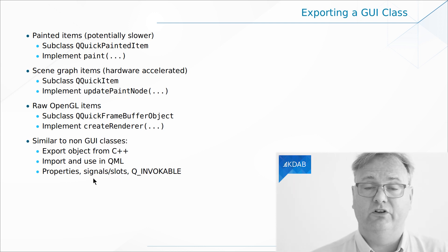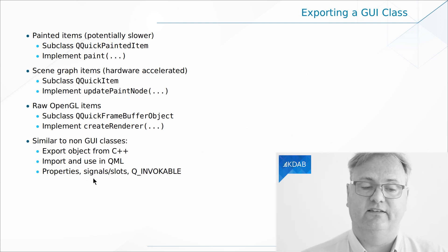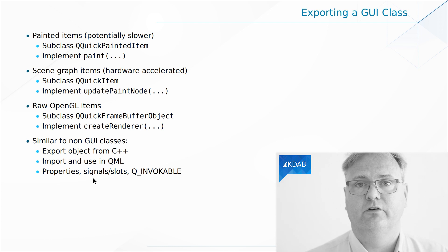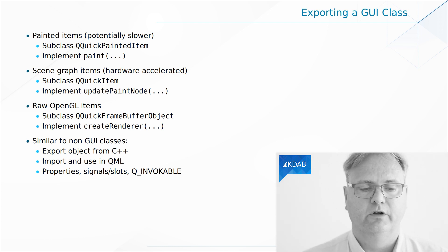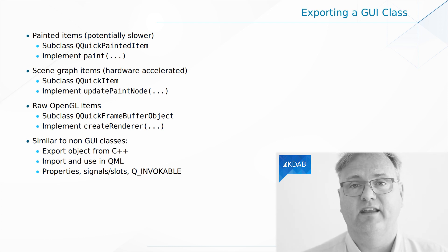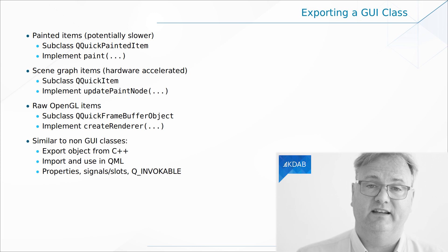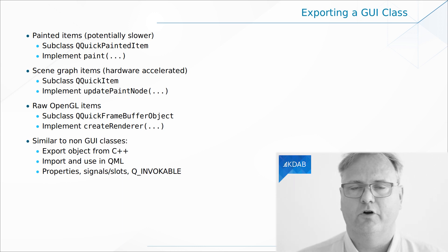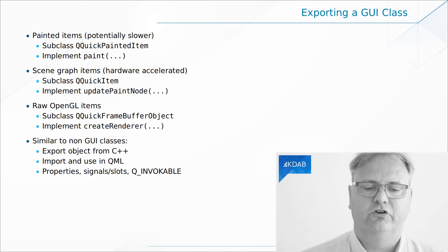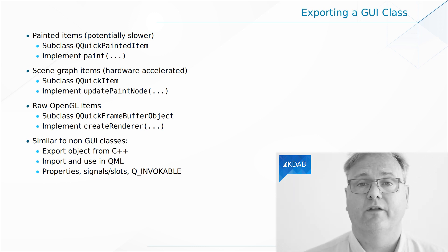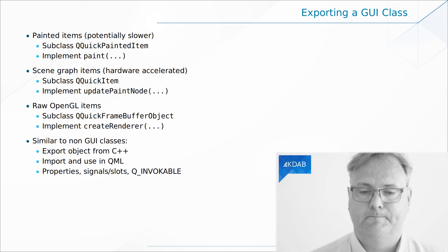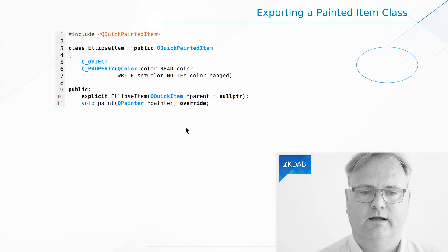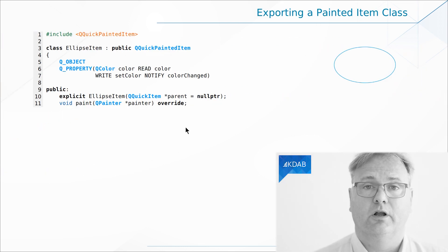In any case, what you still need is to export your objects from C++ using what we saw in the previous video — anything we talked about with signals, slots, properties, Q_INVOKABLE, and all of that stuff still applies. So let's see a simple object.